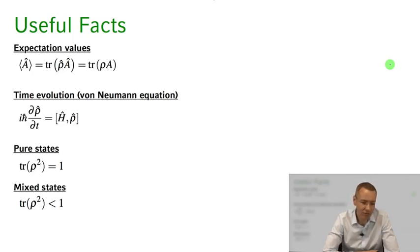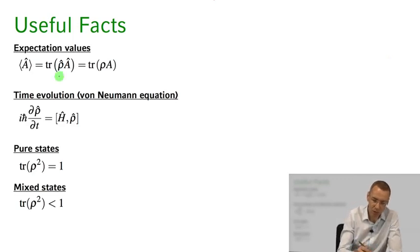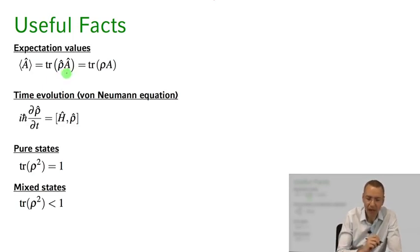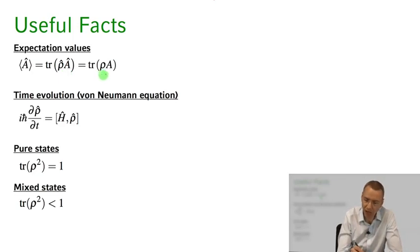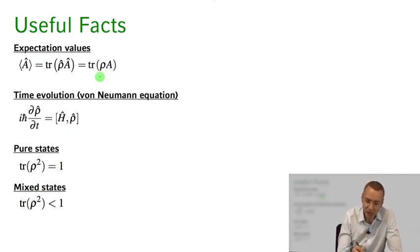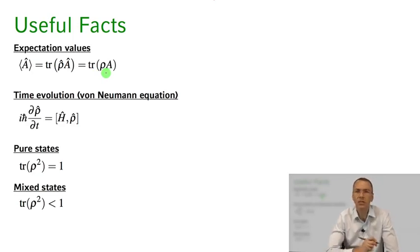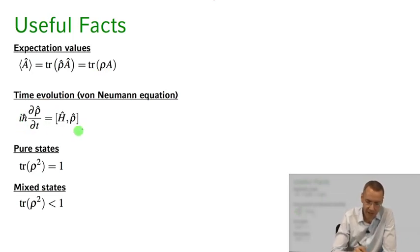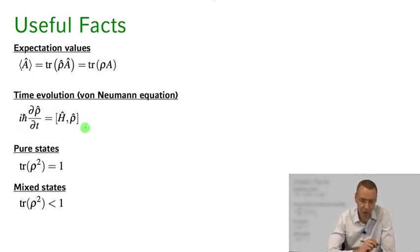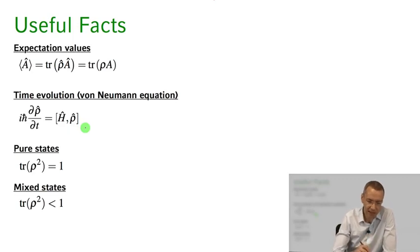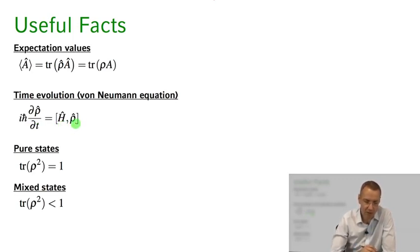Let me recap some useful facts we'll make use of in the course. If you want to calculate an expectation value of an observable, it's given by the trace of the density operator times that operator — Tr(rho · A). Writing rho and A as 2×2 matrices in our two-level basis, this is just the trace of the product of rho and A. For time evolution, the von Neumann equation extends the Schrödinger equation to density operators: the time derivative of rho equals (1/iħ) times the commutator of the Hamiltonian with the density operator.